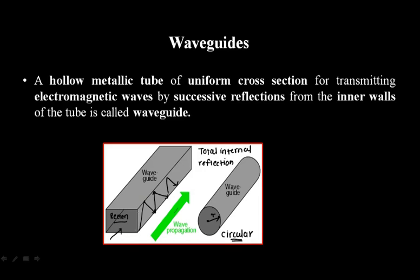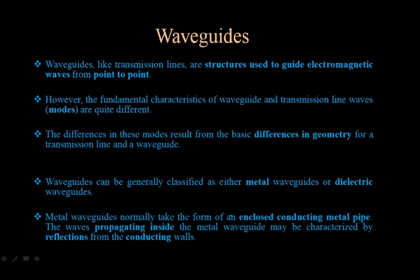Waveguides are hollow metallic tube-like structures formed by only a single conductor. If you take any conventional transmission line, the structure is made up of two conductors — one to carry the positive and the other to carry the negative. But in waveguides, the structure is a single enclosed conductor. Next, let's look at the properties of waveguides.